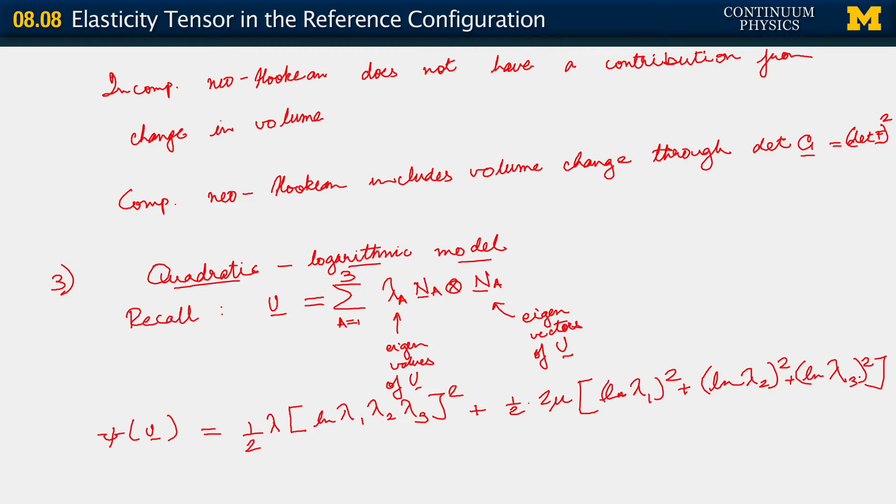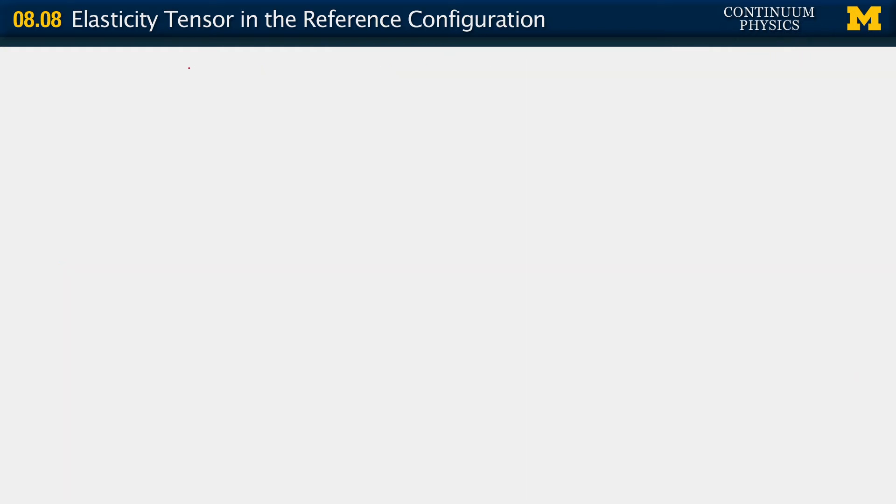Now, of course, with any one of these models, we can compute any of the stresses. So we just start out with the psi in whatever form we like. And because we know the transformations between the stretch tensor U, the right Cauchy-Green tensor C, or the Lagrange strain tensor E, we can always convert one model to any other form. We can always change these parametrizations. They're all frame invariant.